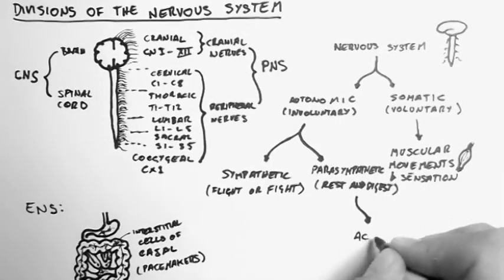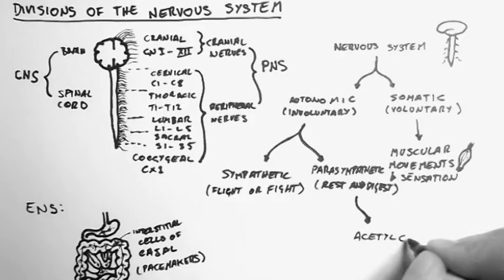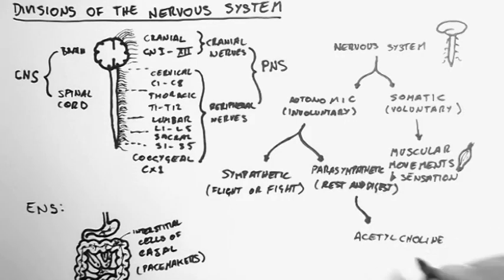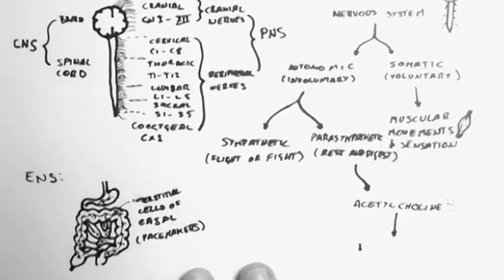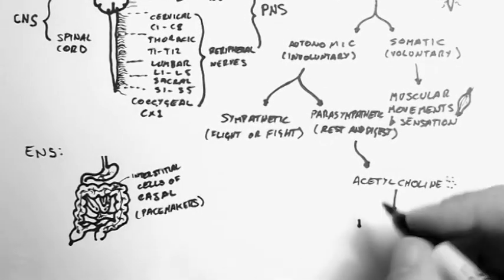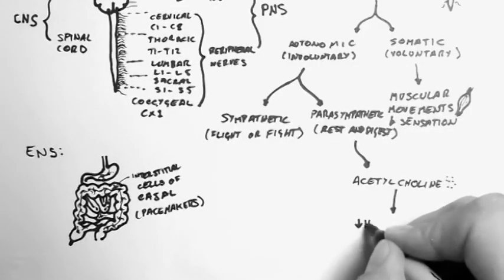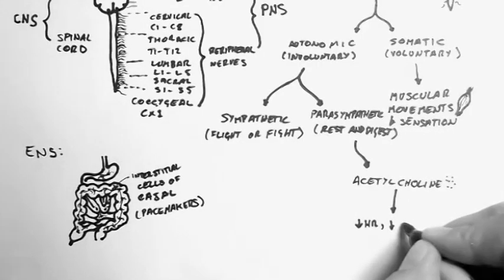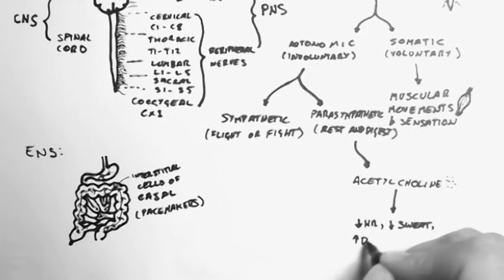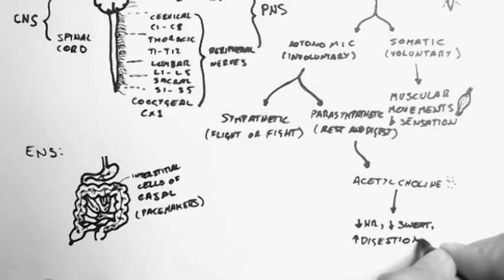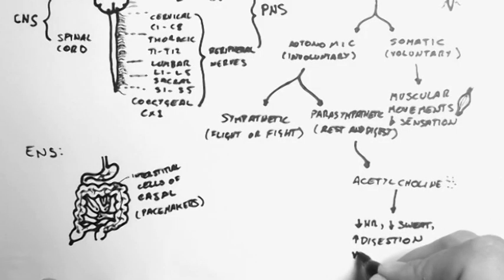Now the parasympathetic is characterised by neurons which release acetylcholine as their neurotransmitter. And these do things like reduce heart rate, reduce sweat, increase digestion, and also cause vasodilation.